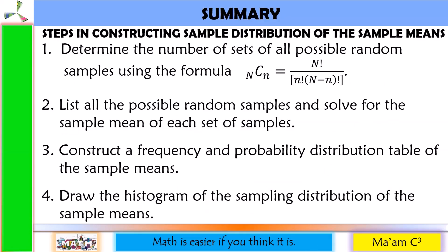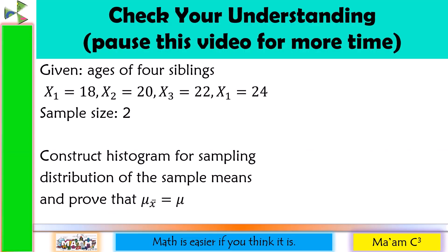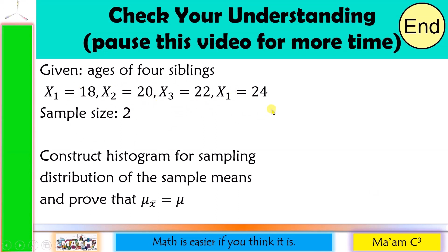For the summary, here again are the steps in constructing the sampling distribution of the sample means. Now it is time to check your understanding — pause this video. We are given the ages of 4 siblings: 18, 20, 22, and 24, with a sample size of 2. Construct a histogram for the sampling distribution of the sample means and prove that the mean of all sample means is equal to the population mean.